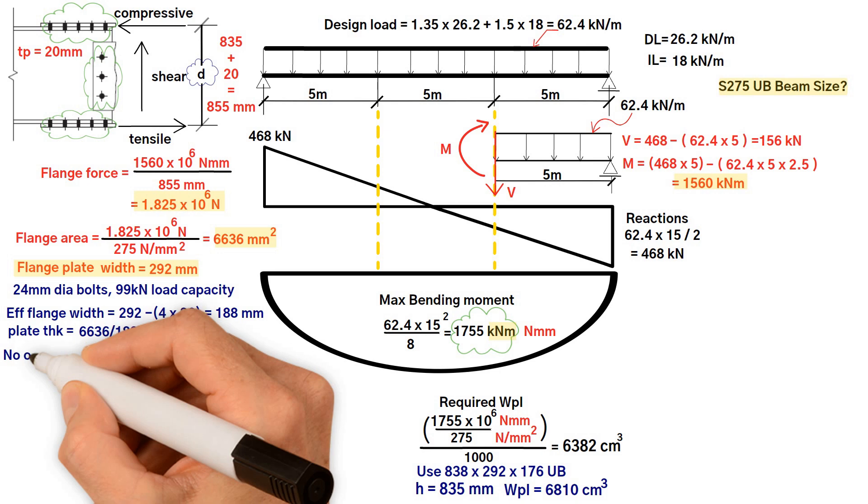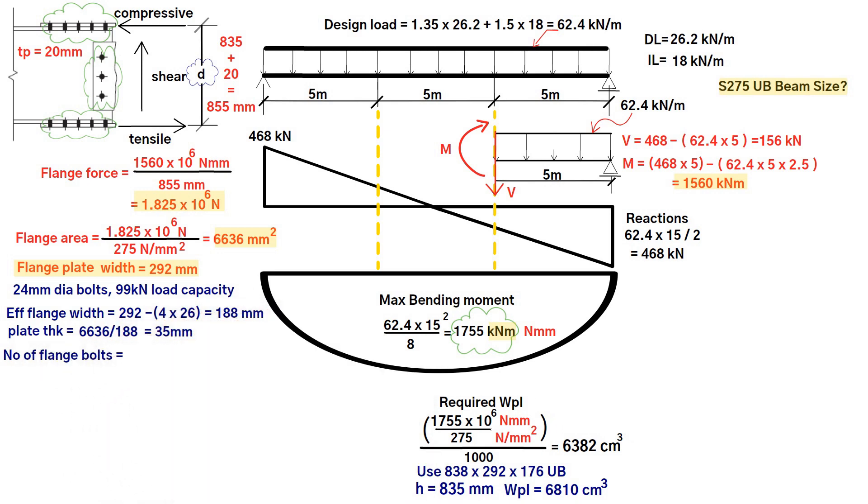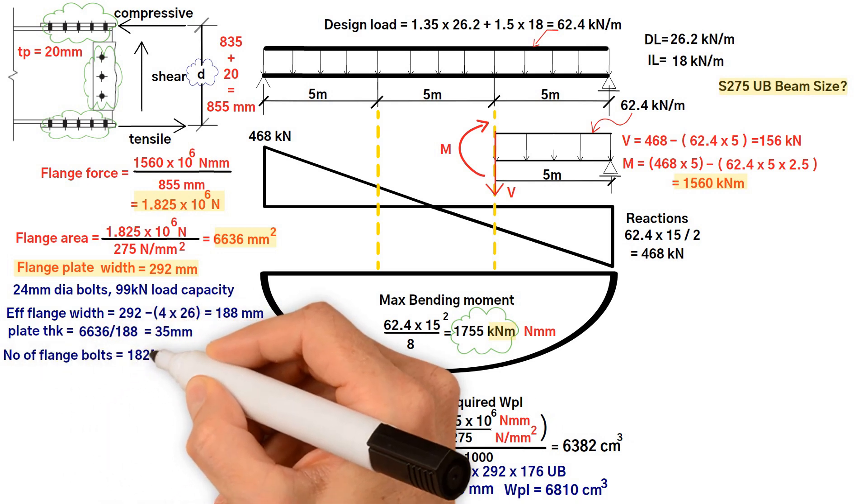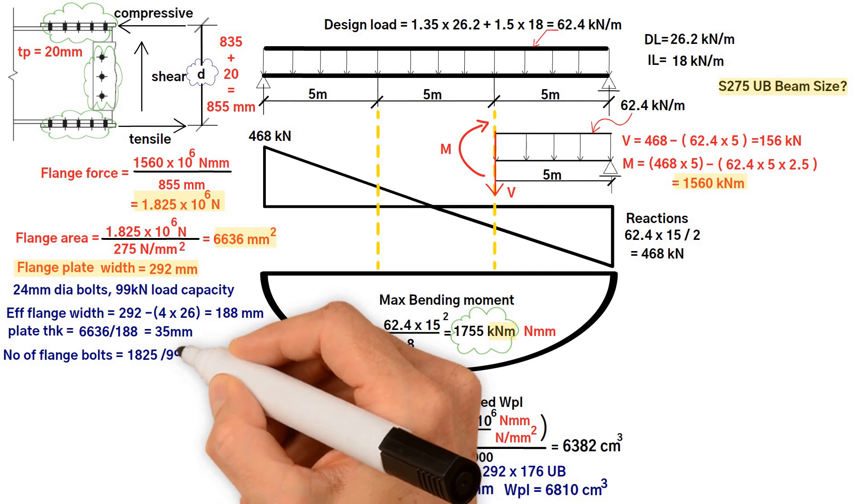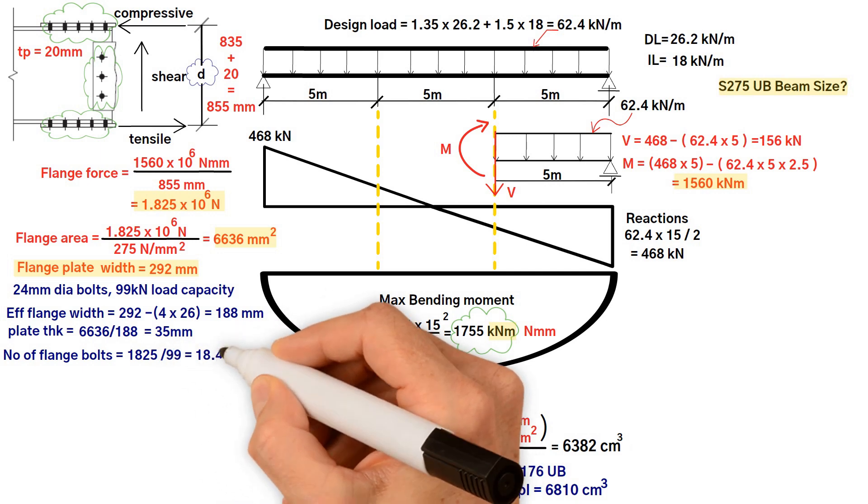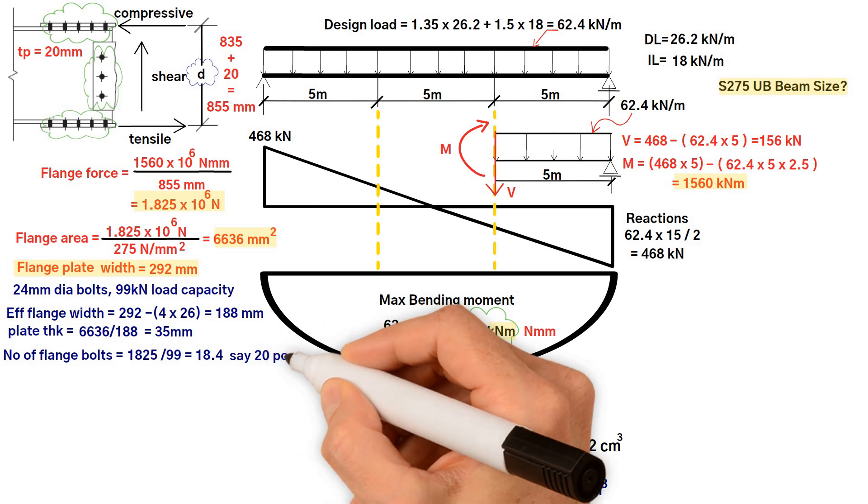In addition, the number of flange bolts would be flange force 1825 kilonewton divided by the bolt load capacity 99 kilonewton equals 18.4, round this up to 20 per side.